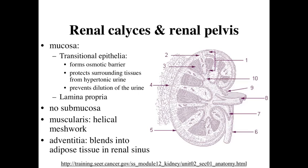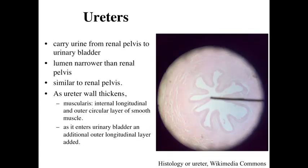An adventitia is going to be surrounding this renal pelvis and the renal calyces, blending into the fat cells that are going to be surrounding it. Ultimately, we're going to drain the renal pelvis into the urinary bladder, and we're going to transport the urine through the ureters.